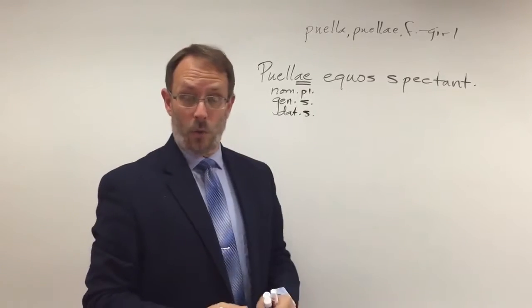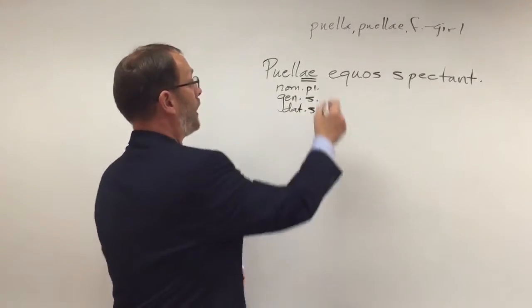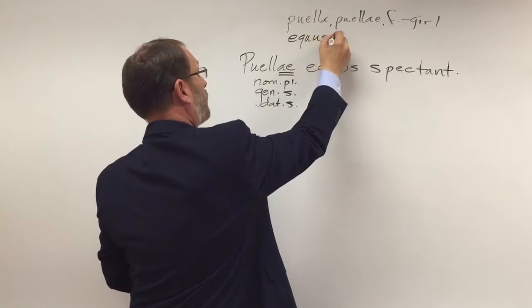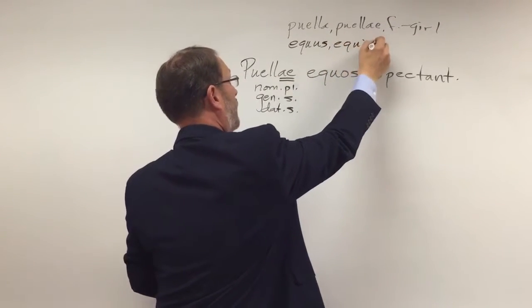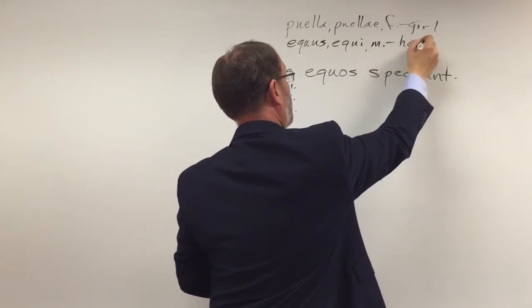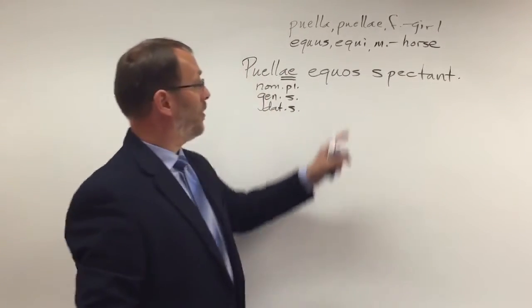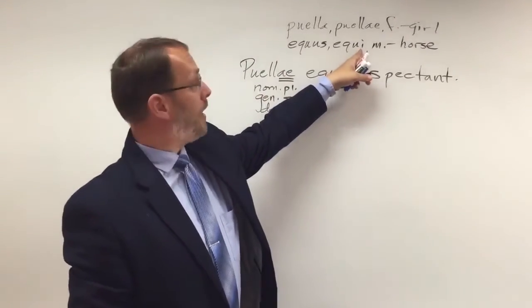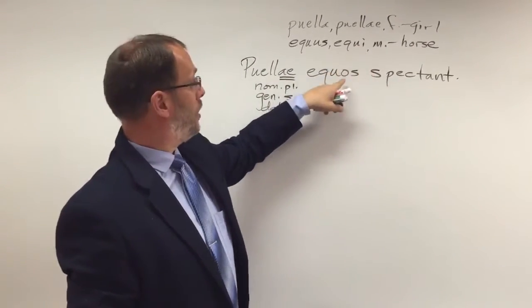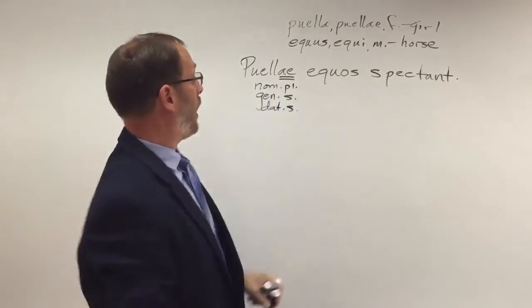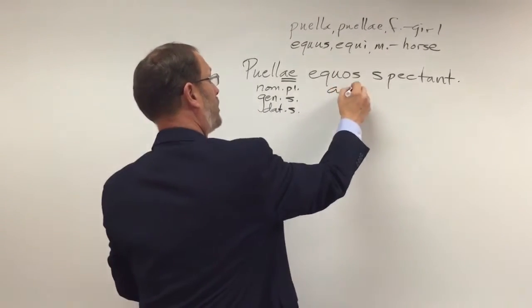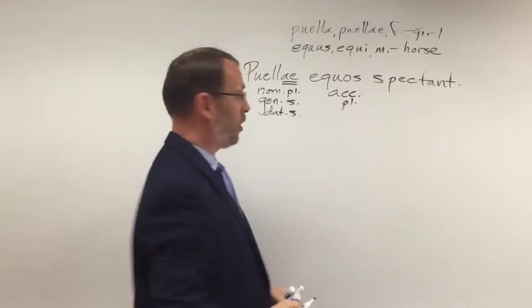And then this word equus, which is from that new vocabulary on page 34. We see equus, equi, masculine, the word for horse. Well, that second entry ending in I tells me that's second declension. Well, the new endings we've got, E-O-S, can only be one thing. That's accusative plural.